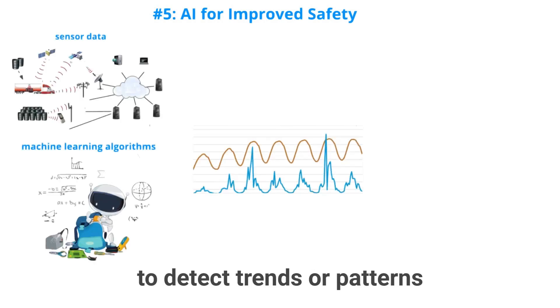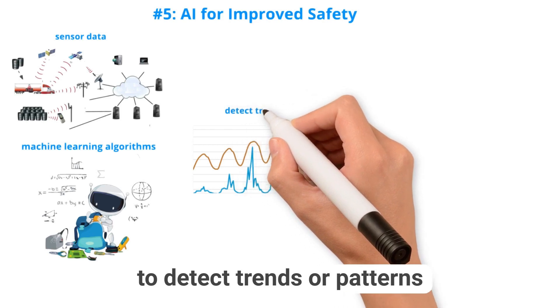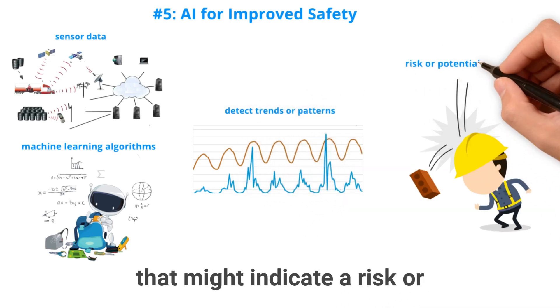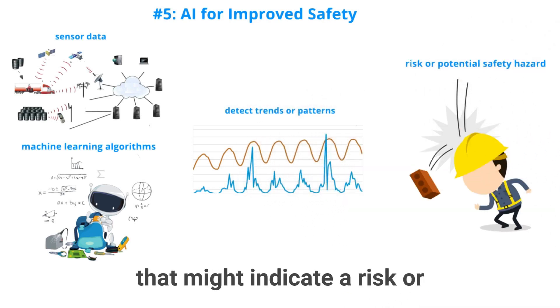And number five: AI for improved safety. For example, sensor data can be analyzed using machine learning algorithms to detect trends or patterns that might indicate a risk or a potential safety hazard.